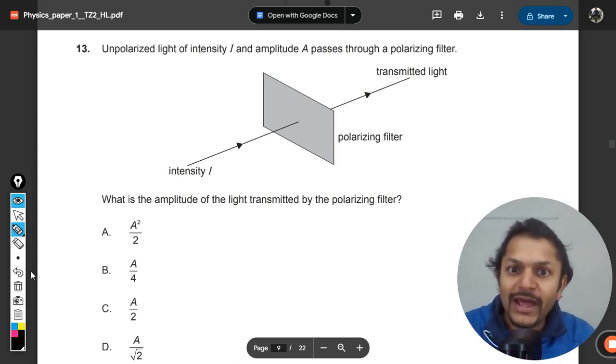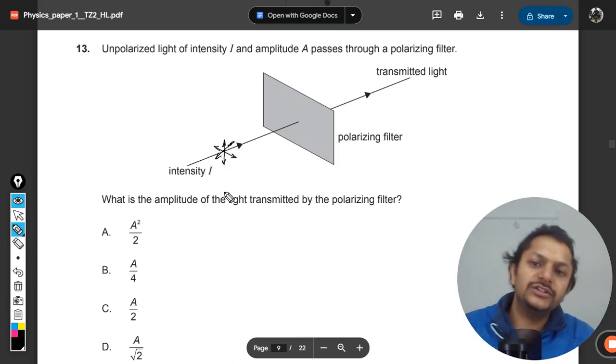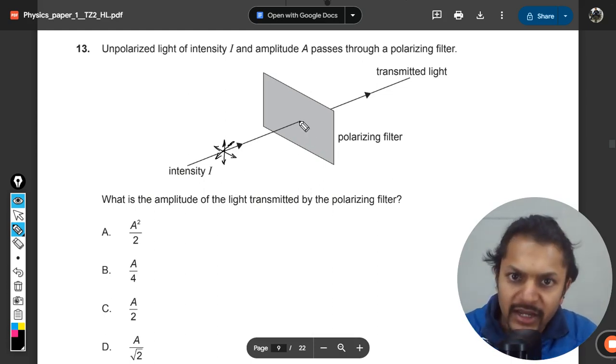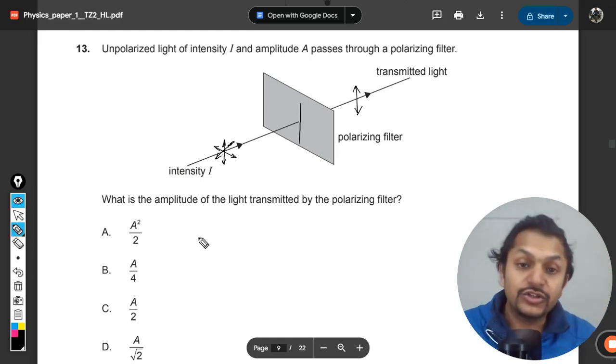What happens is that if this light is unpolarized, which can be shown like this, so this is unpolarized light which is coming and which hits this point, it becomes polarized. When it becomes polarized, let's say the axis is vertical here, so only the vertical outlet will be there. So this is the polarized light.